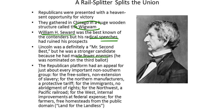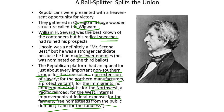The Republican platform had an appeal for just about every important non-Southern group. For the Free Soilers, a non-extension of slavery. For the Northern manufacturers, a protective tariff. For the immigrants, no abridgment of rights. For the Northwest, a Pacific railroad. For the West, internal improvements at federal expense. And for the farmers, free homesteads from the public domain — in other words, land for the landless.